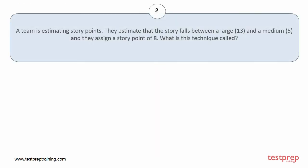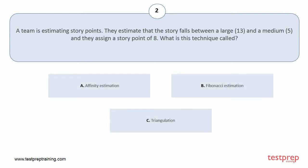Question number 2: A team is estimating story points. They estimate that the story falls between a large 13 and a medium 5, and they assign a story point of 8. What is this technique called? Your options are: A, affinity estimation; B, Fibonacci estimation; C, triangulation. The correct answer is option C.